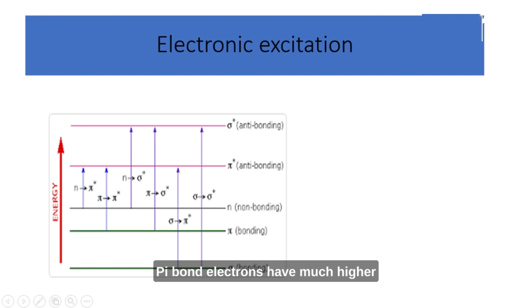Pi bond electrons have much higher energy levels for the ground state. Therefore, these electrons are relatively unstable, can be excited more easily, and require lesser energy for excitation. These electrons would therefore absorb energy in the ultraviolet and visible light radiations. Non-bonding electrons generally belong to lone pairs of atoms. These are of higher energy levels than pi electrons and can also be excited by ultraviolet and visible light.